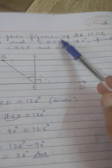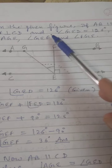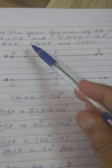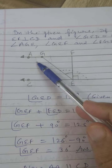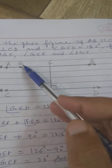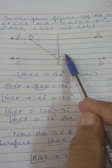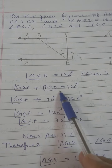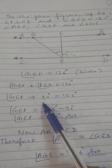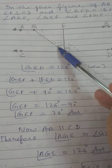Question number 3: In the given figure, AB is parallel to CD, EF is perpendicular to CD (so this angle is 90°), and angle GED equals 126°. We have to find angles AGE, GEF, and FGE. We can write angle GED as angle GEF plus angle FED. Since FED equals 90°: GEF plus 90° equals 126°, so angle GEF equals 126° minus 90° equals 36°.